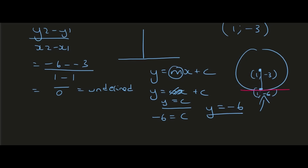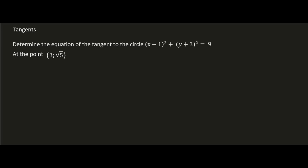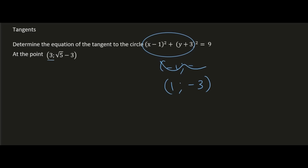It doesn't have any gradient because it's completely horizontal. The last question for this video: determine the equation of the tangent to the circle at the point (3, √5 - 3). The center of the circle from the equation is (1, -3), and the point where the tangent touches is (3, √5 - 3). It's a good skill to be able to do this without drawing a circle.